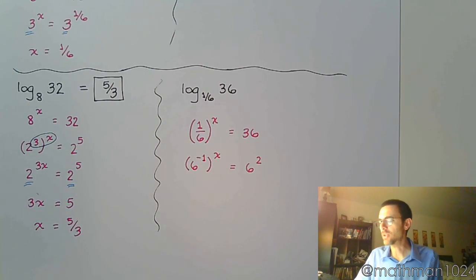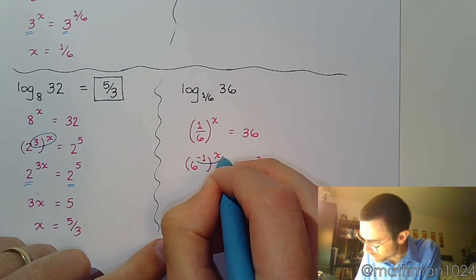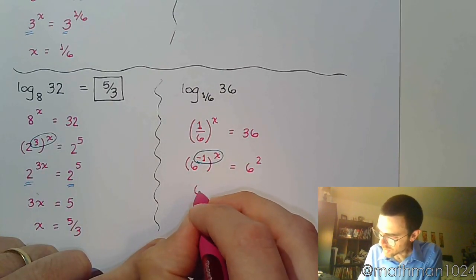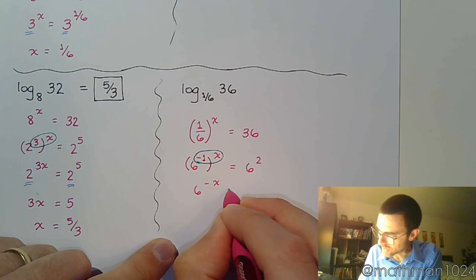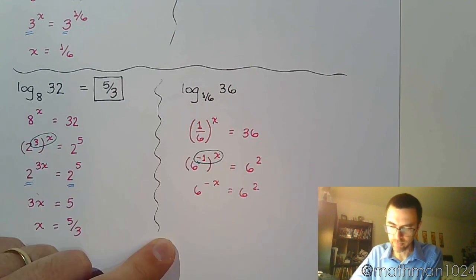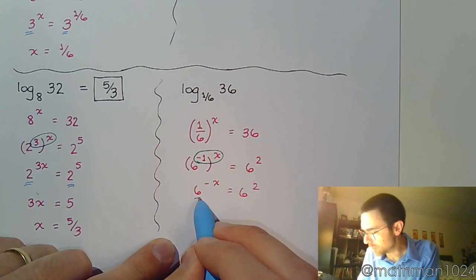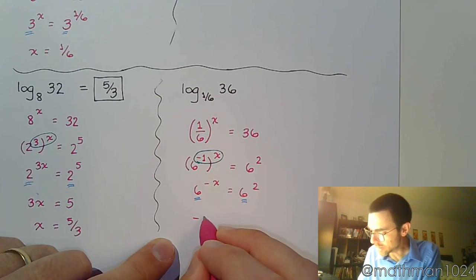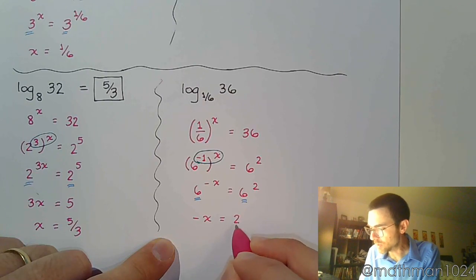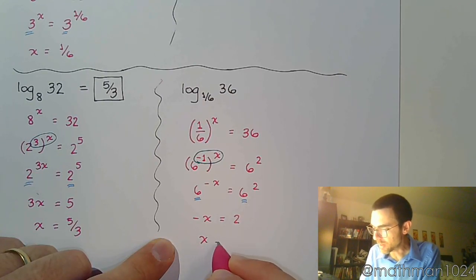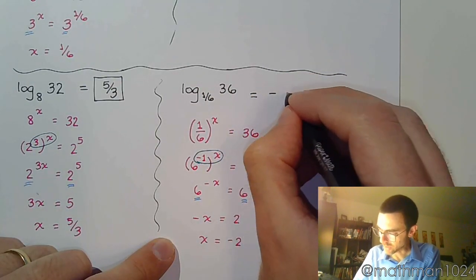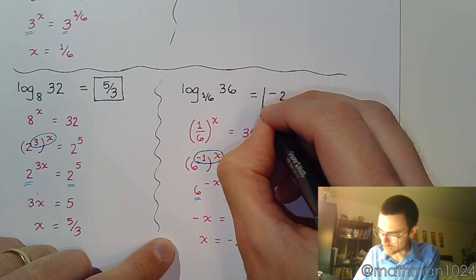And now we just fall back into our old habits. Powers to powers. We're going to multiply these. So that's 6 to the negative x is equal to 6 squared. Since we have the same base on both sides of the equation, we can now equate those powers. So negative x is equal to 2. Finish getting x by itself and x equals negative 2. So that is the answer to the logarithm.